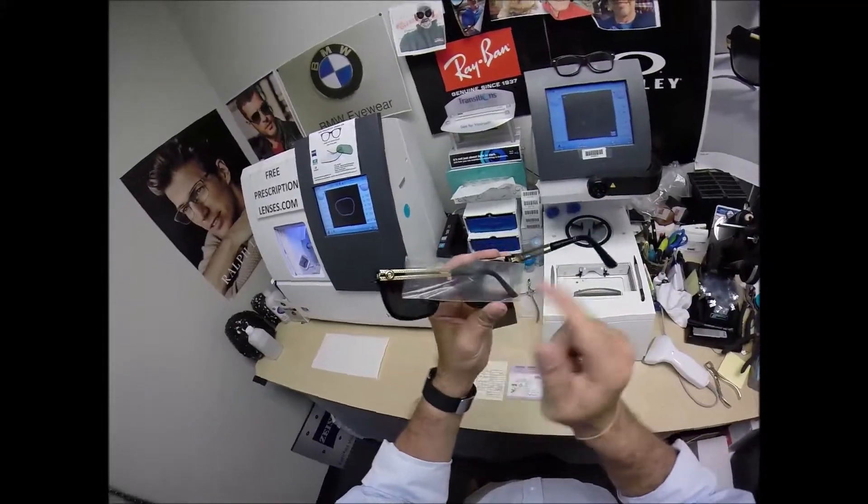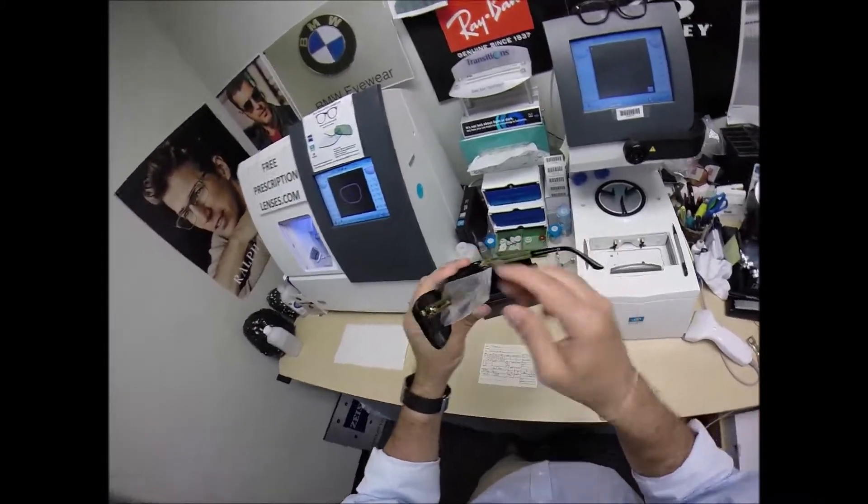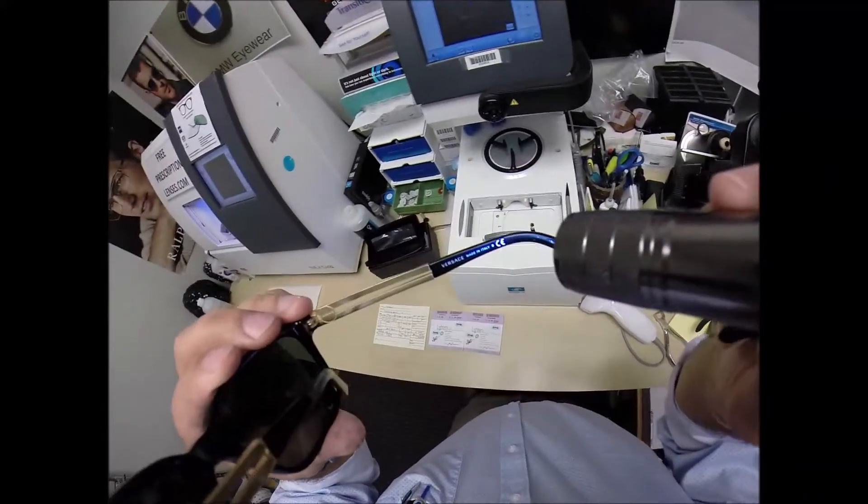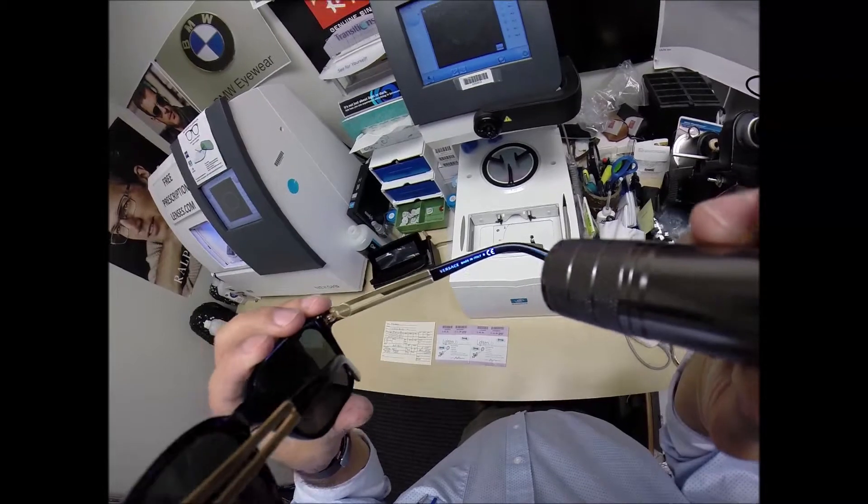It comes with a plastic sleeve on the left temple to protect the temples from rubbing together while it is being shipped from Italy. All Versaces are made in Italy.